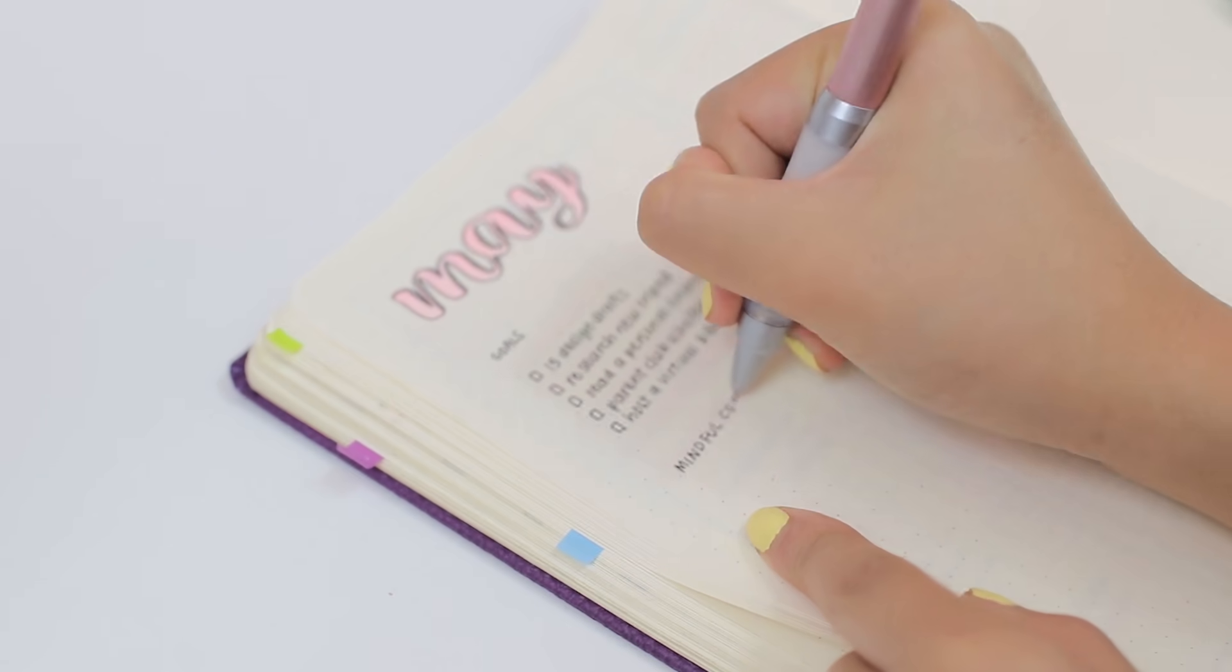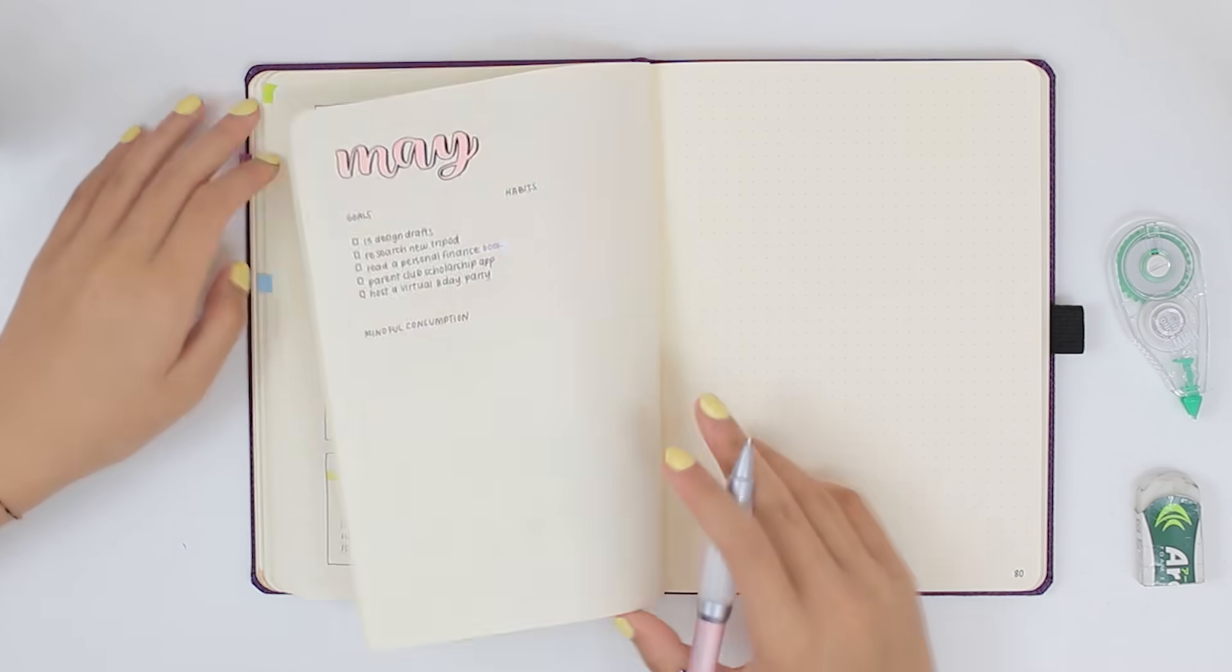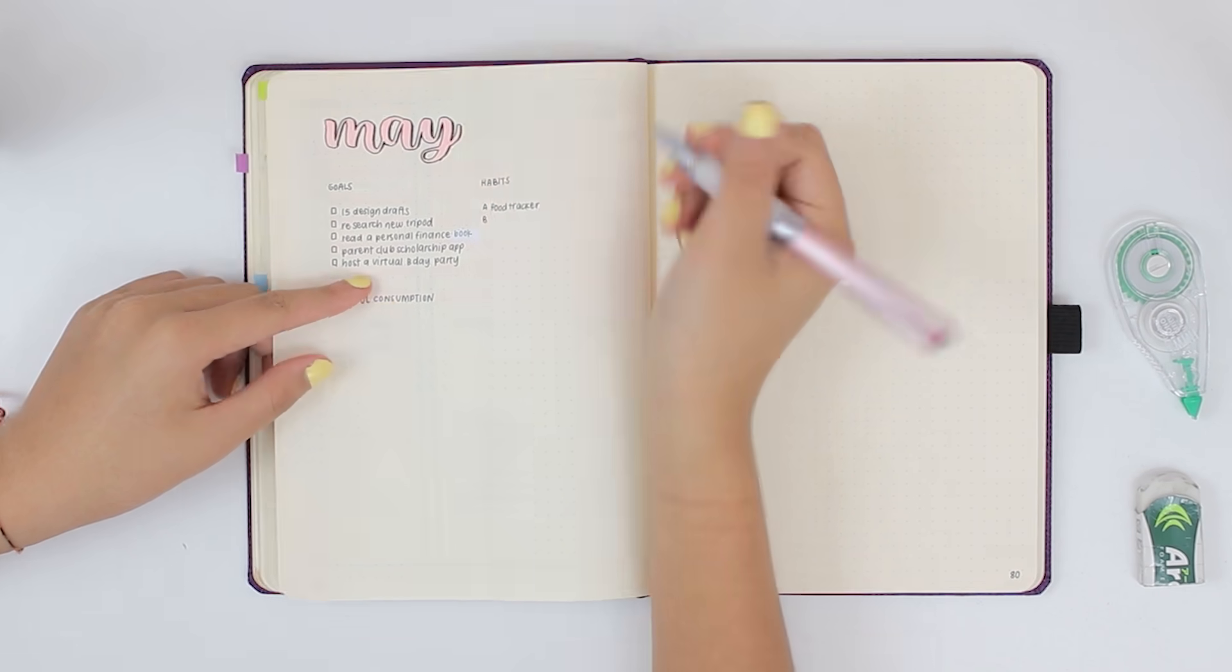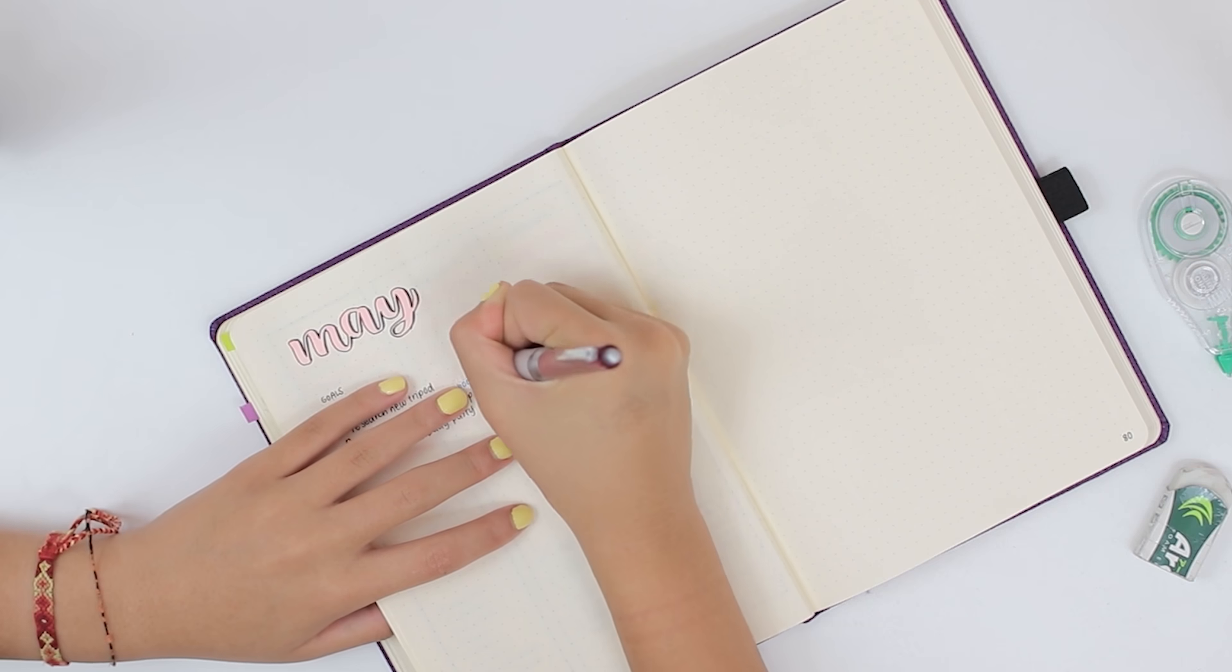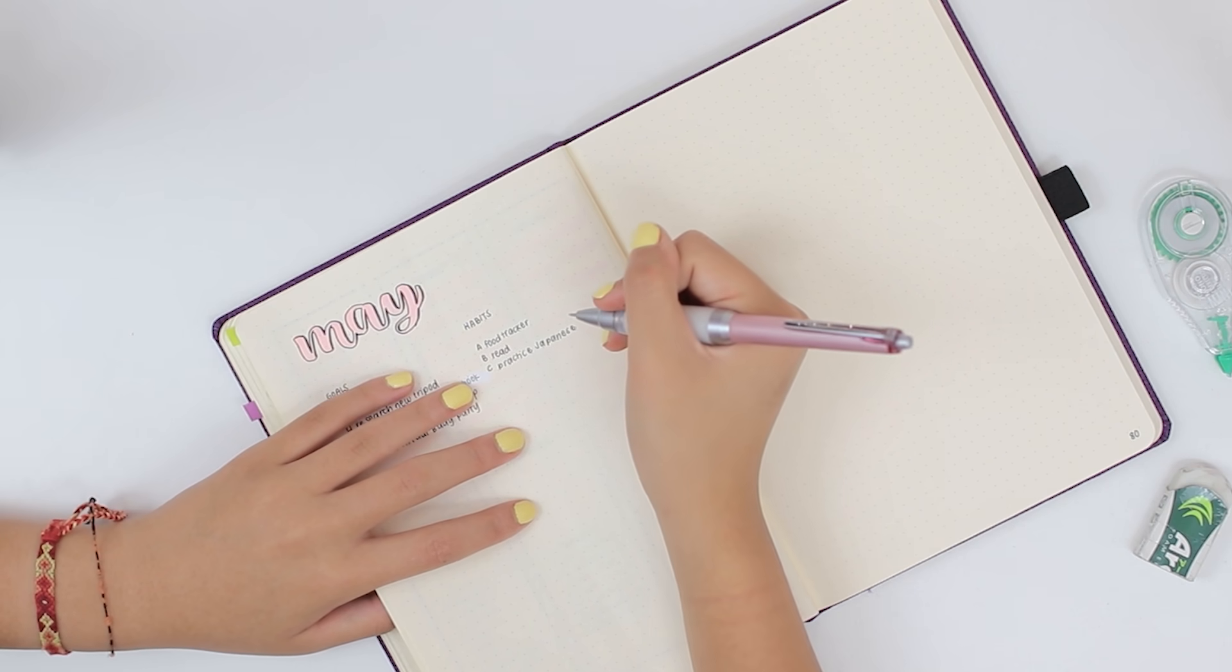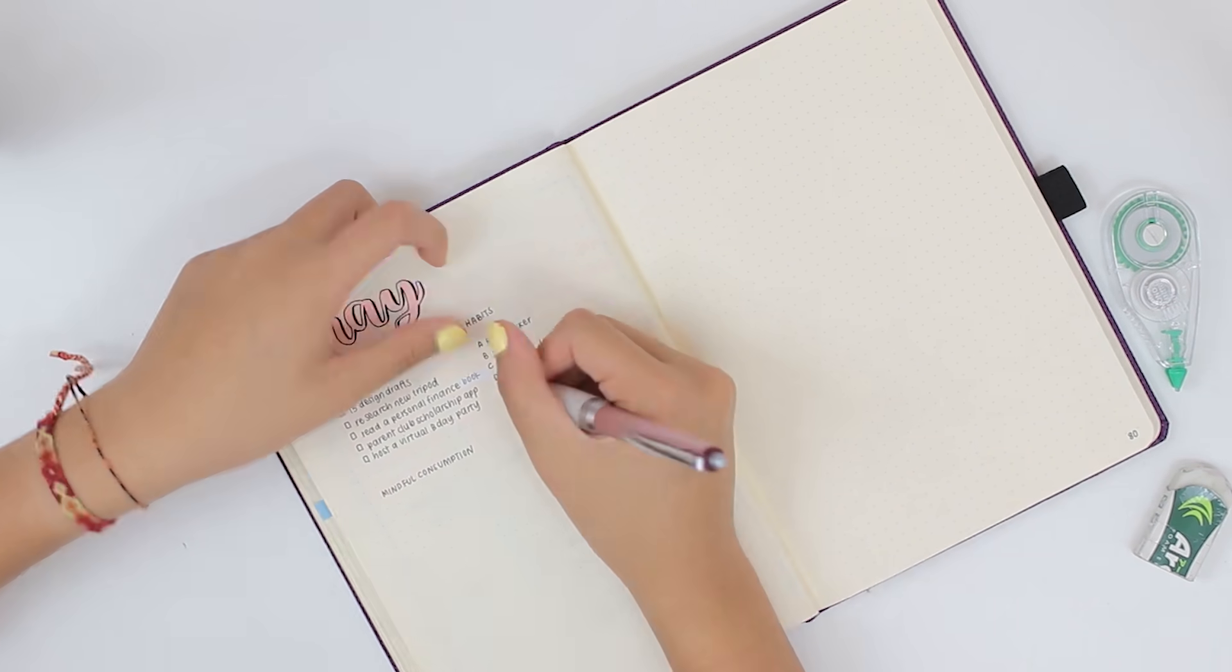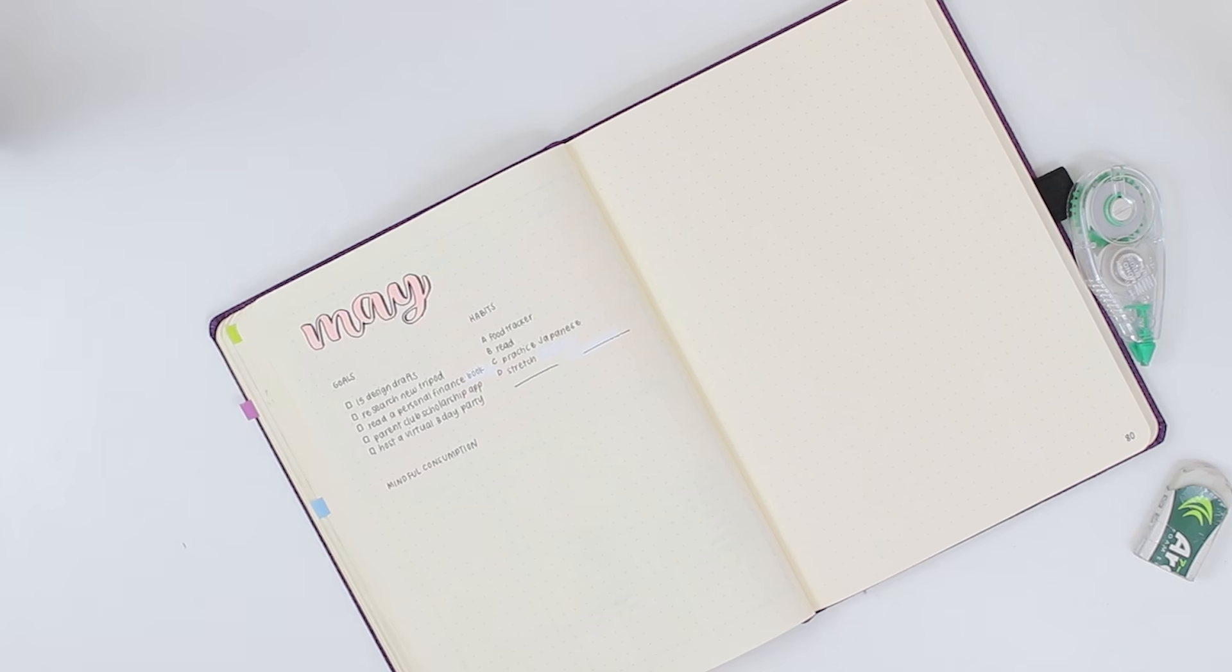Below that, I'm setting up the same mindful consumption tracker as always. It is in progress, you will see that later in the video. And next to my goals, I'm writing out my habits for the month. The ones I was working on for May were tracking my food to make sure I get proper nutrition every day, reading more often so that hopefully that can become my default activity for when I'm bored instead of just mindlessly browsing the internet, practicing Japanese on Duolingo at least once a day.